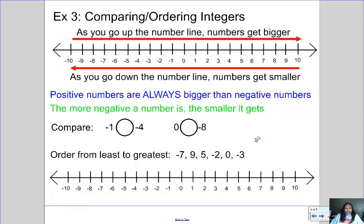Another important skill is putting integers in order from least to greatest. As you go to the right on the number line the numbers get bigger, and as you go to the left the numbers get smaller. This can be a little deceiving with negatives: it would seem that negative ten is a much bigger number than negative one, but it's actually a lot smaller. Positive numbers are always bigger than negative numbers — even positive one is greater than negative two thousand.